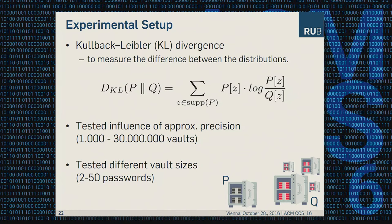We tested the influence of approximation precision between 1,000 and 30 million vaults, and tested the difference in vault size — from vaults with only two passwords up to vaults with 50 passwords.